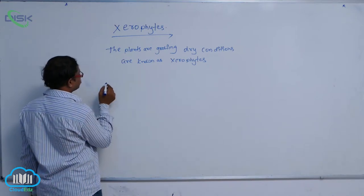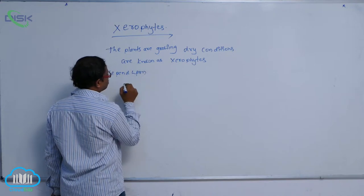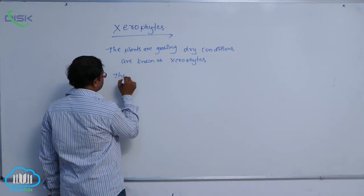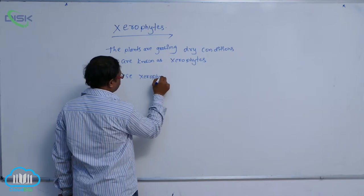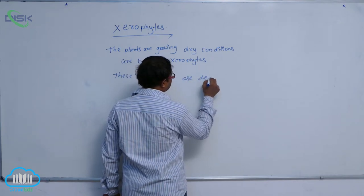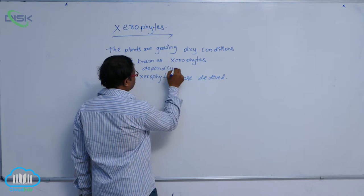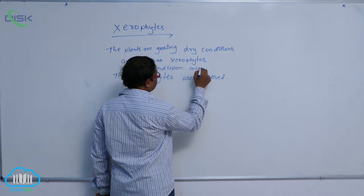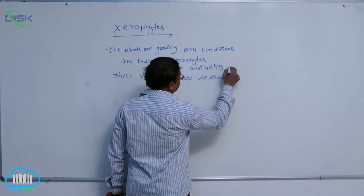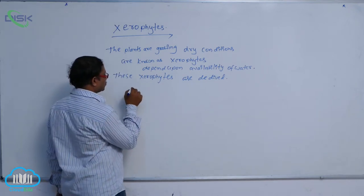For example, depend upon the availability of water. These Xerophytes are divided into three groups, depending upon availability of water.